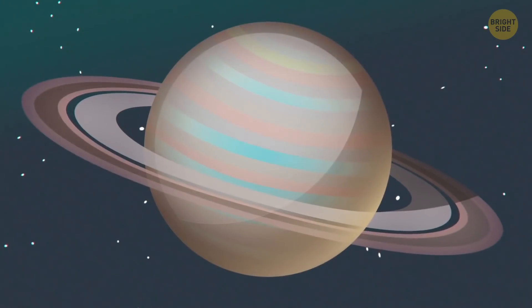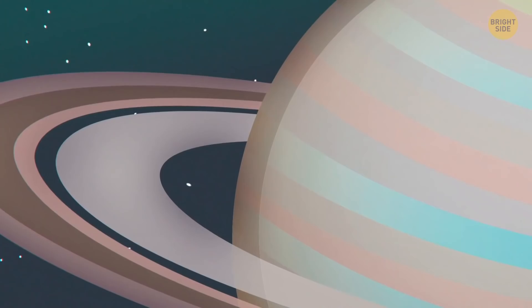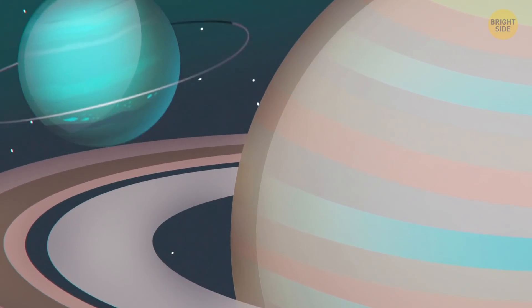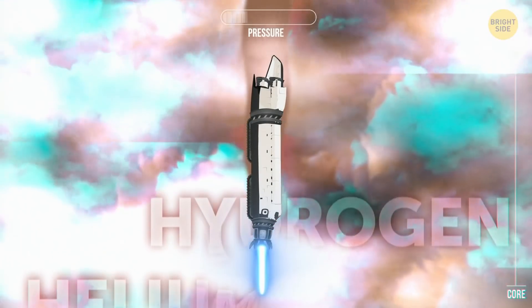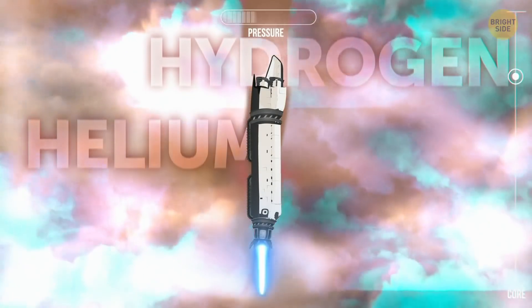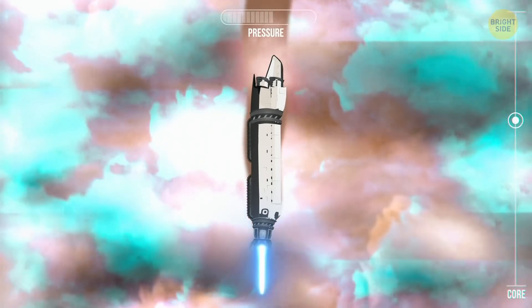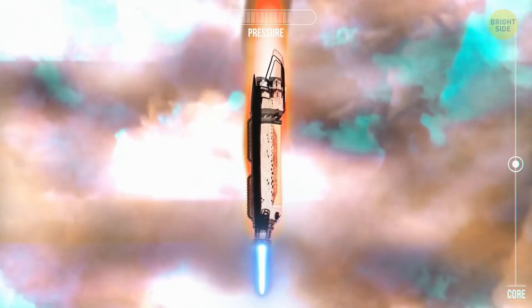And that would be Saturn! The second-largest planet of the solar system, and the one best known for its spectacular rings. Not the only one to have them at all, mind you, but we'll get to it. Now, as you've surely noticed, our drill is simply falling down through the gaseous hydrogen and helium, making up most of the planet's surface and atmosphere. No need to work here, just wait and hope the immense pressure won't crush our drill to a hunk of junk.